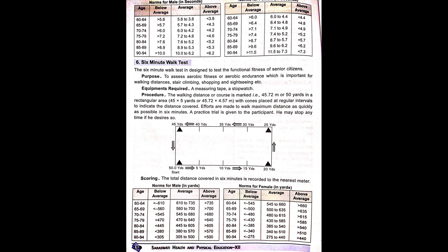Equipment required: a marking tape and a stopwatch. Procedure: The walking distance course is marked at 45.72 meters or 50 yards in a rectangular area.